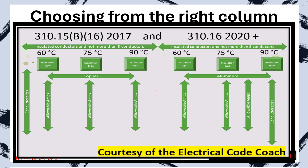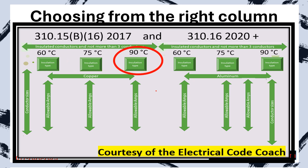Now let's talk about choosing from the right column — this is the last step before we start doing questions. Up until this point we've most often chosen from the 75°C column. There will be times we choose from 60°C, but now we start choosing from the 90°C column. 99% of the time you're going to choose from the 90°C column any time you're doing bundling adjustments or temperature corrections.